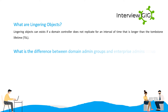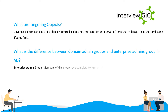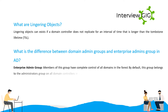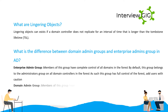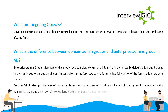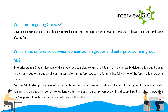What is the difference between domain admin groups and enterprise admins group in AD? Enterprise admin group: members of this group have complete control of all domains in the forest by default. This group belongs to the administrators group on all domain controllers in the forest; as such, this group has full control of the forest — add users with caution. Domain admin group: members of this group have complete control of the domain by default. This group is a member of the administrators group on all domain controllers, workstations, and member servers at the time they are linked to the domain; as such, the group has full control in the domain — add users with caution.